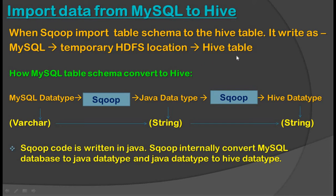So how does the MySQL table schema convert to Hive? Sqoop converts MySQL data types to Java data types, and then from Java data types to Hive data types. For example, a VARCHAR in MySQL is converted to String in Java, and then String in Hive.